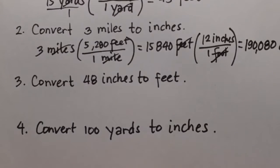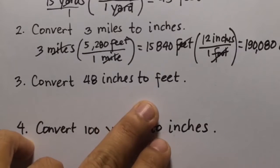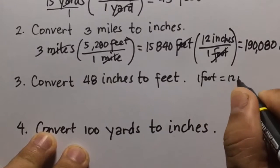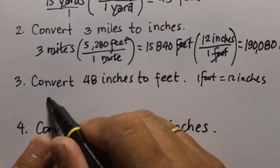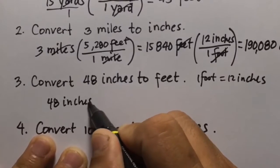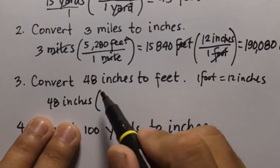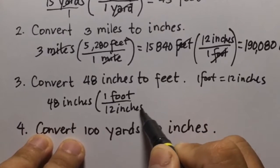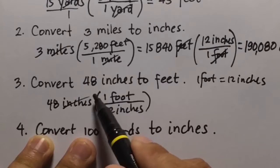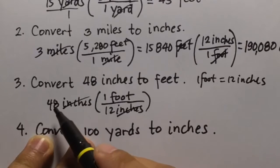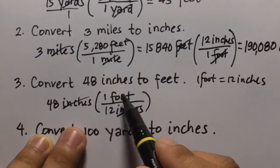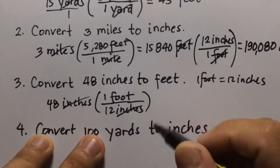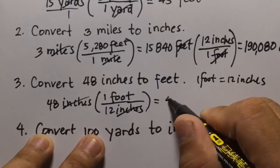Number three: convert 48 inches to feet. Since 1 foot equals 12 inches, we multiply 48 inches by 1 foot over 12 inches. Cancel inches, then 48 divided by 12 equals 4, so 48 inches equals 4 feet.